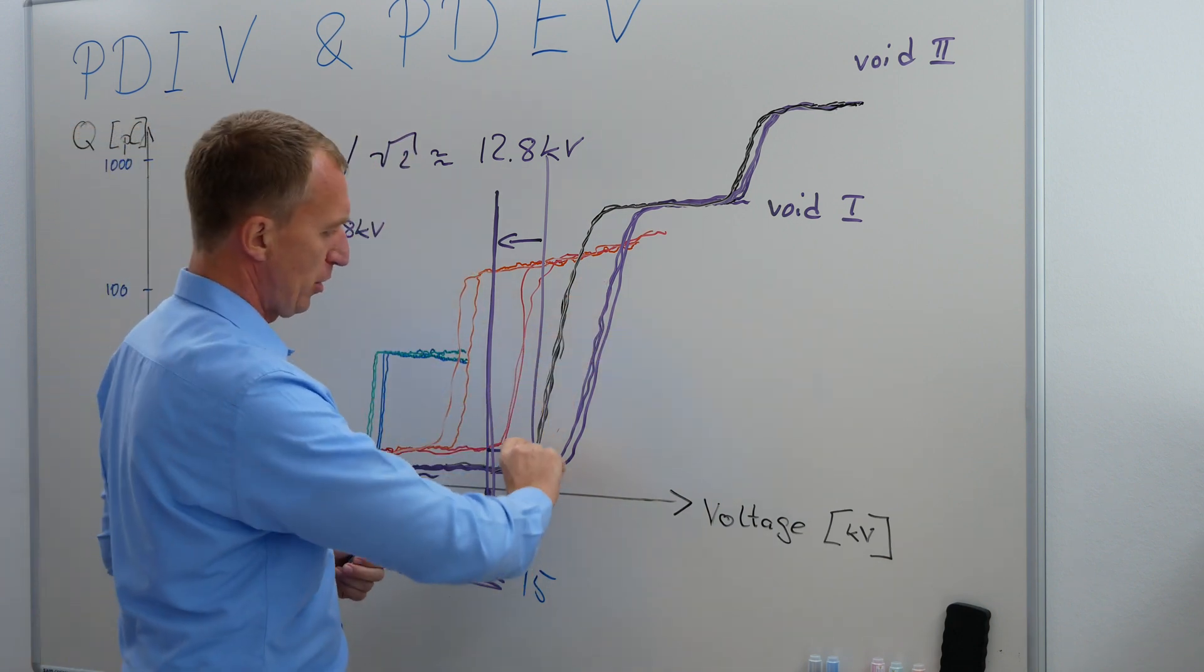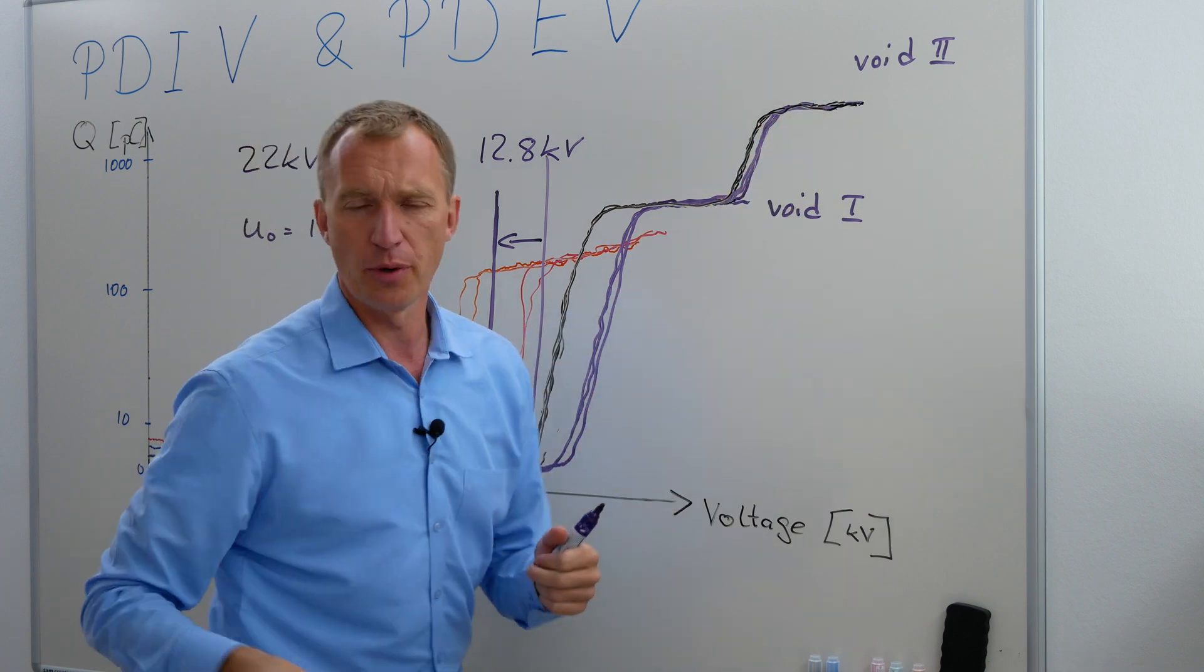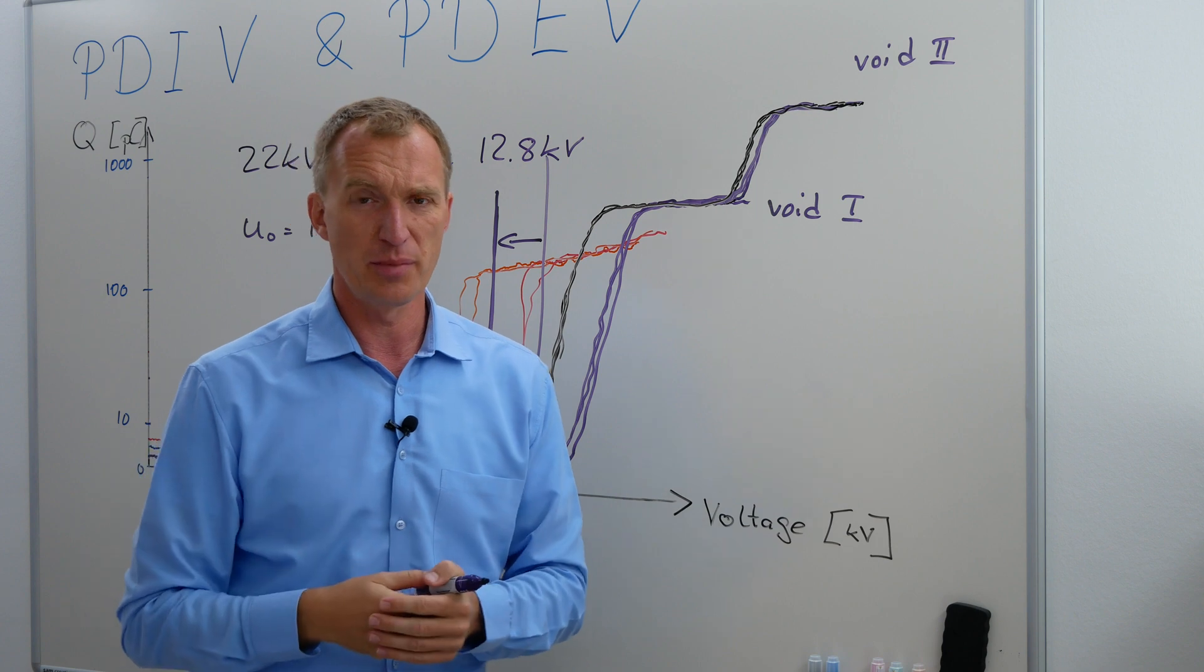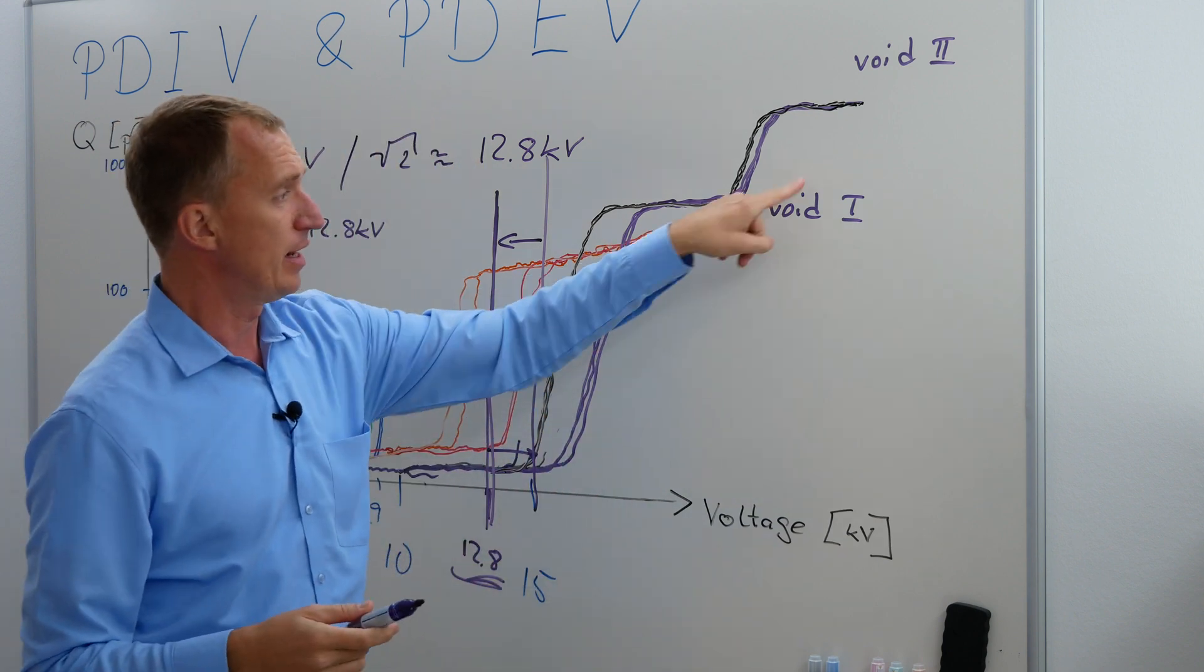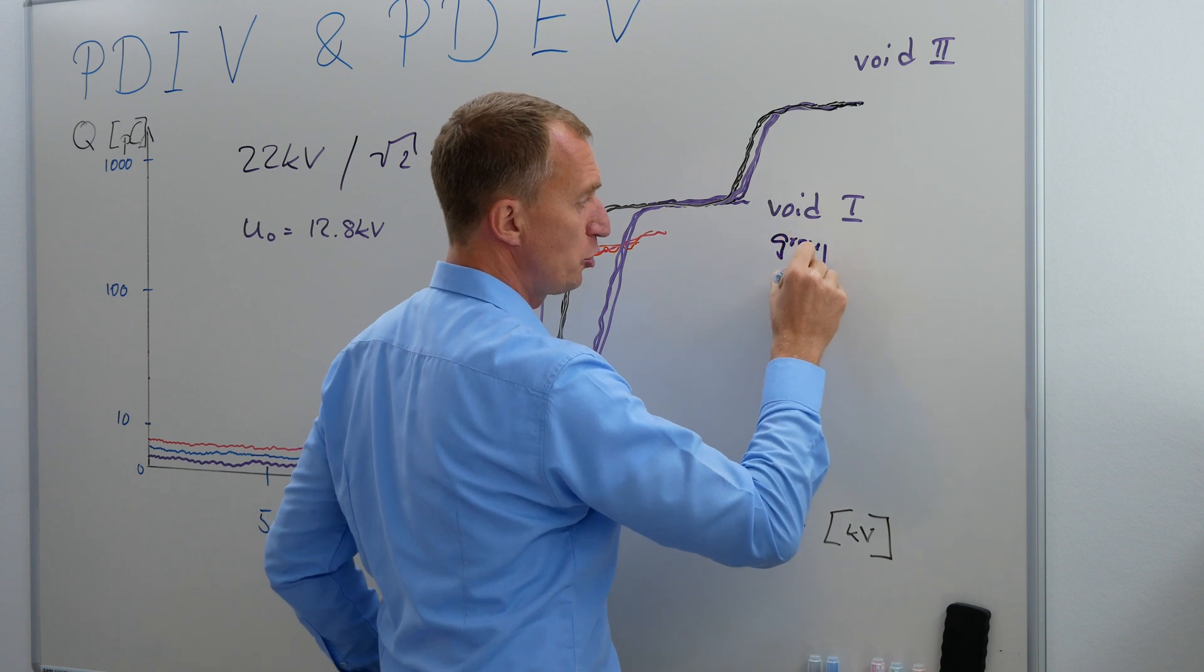In the last video, I said, okay, this hysteresis here could be void one, and this one here could be void two. This is not 100% correct, right? I'm talking about oversimplifications. Technically, let's call this void group number one, because it's a full group. I do not know.